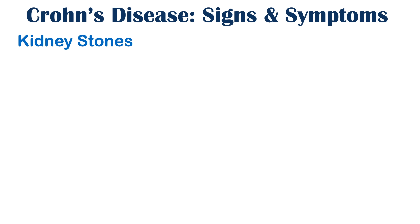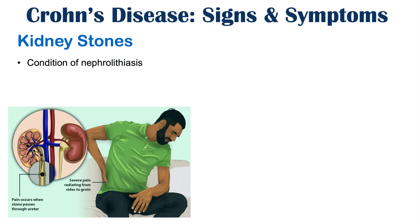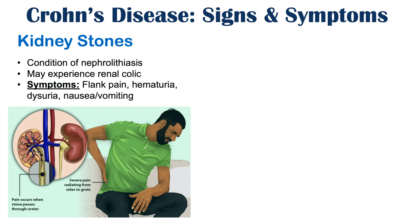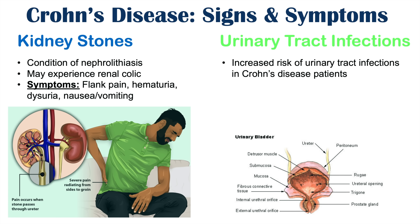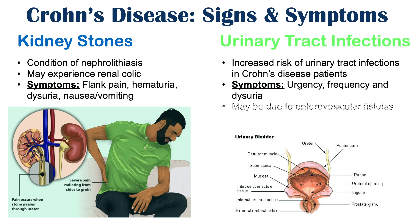Crohn's disease patients are also at increased risk for kidney stones, or nephrolithiasis. With kidney stones, they may experience renal colic — flank pain that radiates to the groin — as well as hematuria (blood in the urine) and dysuria (burning sensation when urinating), along with nausea and vomiting. There is additionally an increased risk of urinary tract infections, presenting with urgency, increased frequency, and dysuria. This may be due to enterovesicular fistulas that connect the gastrointestinal tract to the bladder, allowing bacteria to enter and increase infection risk.